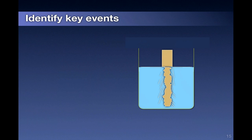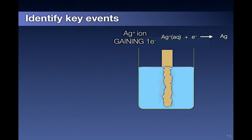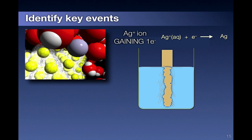The next step is to really look at connecting the three thinking levels. What were the observations? The solution turns blue, silver crystals form on the surface, and some of the copper gets eaten away. Then we have to go through the molecular events and the symbolic language used to communicate them. The first part is the explanation for the formation of the silver crystals, which involves silver ions gaining electrons, described in that way.